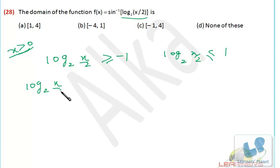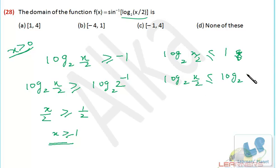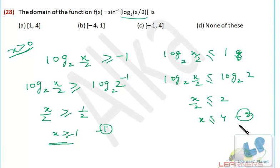We raise both sides with base 2. Since the base 2 is greater than 1, the inequality sign is retained. From log₂(x/2) ≥ minus 1, we get x/2 ≥ 1/2, so x ≥ 1. From log₂(x/2) ≤ 1, written as log₂(x/2) ≤ log₂(2), we get x/2 ≤ 2, so x ≤ 4. The condition x > 0 is already fulfilled. Therefore x must be between 1 and 4, both included. The domain is [1, 4].